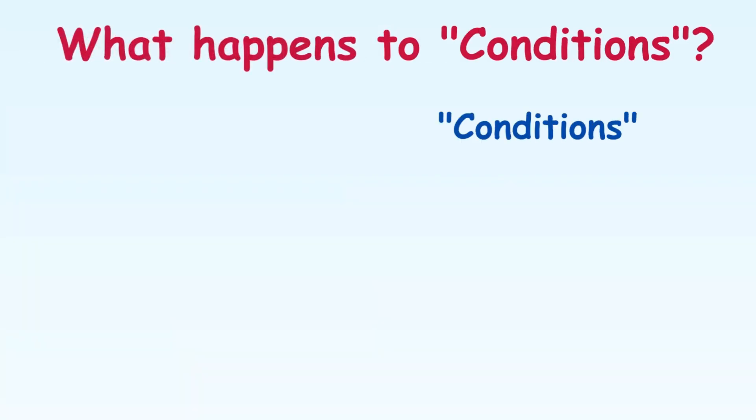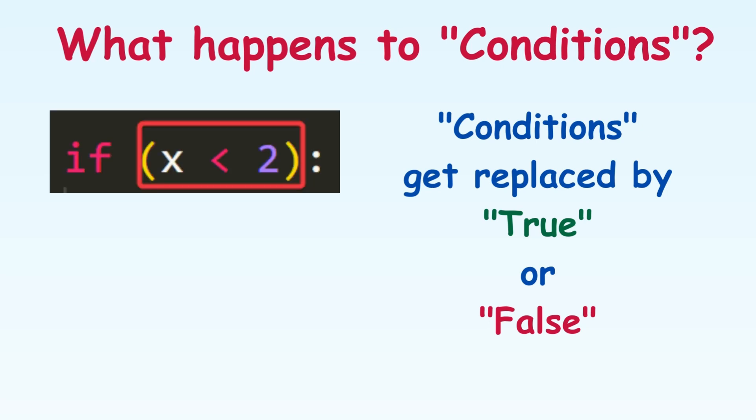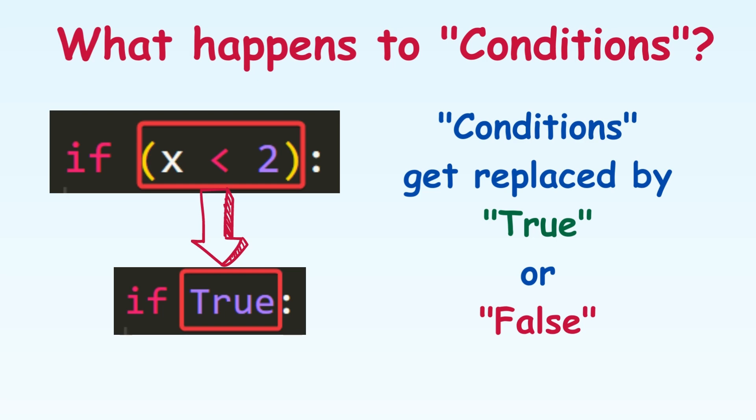Any part of our code that contains a condition will get replaced by true or false when the Python interpreter is executing our code. So in our previous example Python first evaluated the condition, it got true, then it replaced the condition with true and executed the statement under if.